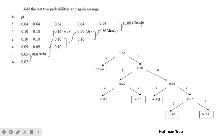Building the Huffman tree: F (probability 0.64) is a leaf node. The 0.36 branch contains D, E, A, C, B. 0.36 is made up of 0.20 (D and E) and 0.16 (A, C, B). Within 0.16, A is 0.09 and 0.07 is further split into 0.05 (C) and 0.02 (B). In this way the full Huffman tree is constructed.